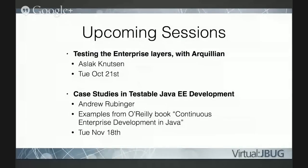So we have a talk on Arquillian next month on the 21st of October, by the project lead Aslak Knutsen. Arquillian is a testing tool for doing integration tests inside an app server — it makes it really easy to write tests that run inside the app server using all the app server technologies. Then the month after, we've got a talk on case studies in testable Java EE development, with Andrew Rubinger, author of the O'Reilly book 'Continuous Enterprise Development in Java', on Tuesday November 18th.